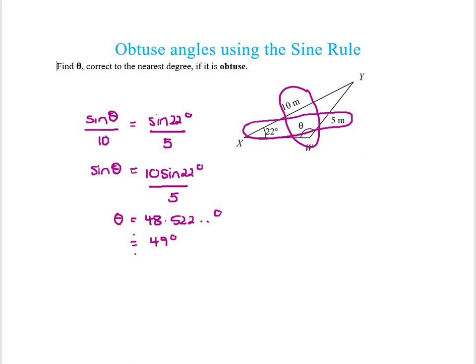But I've been told to find the obtuse angle. So because I'm looking for an obtuse angle, to find the obtuse angle I simply do 180 take away 49, and that's going to give me my obtuse angle theta, and the answer I get is 131 degrees.